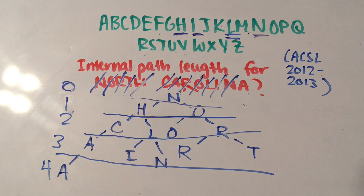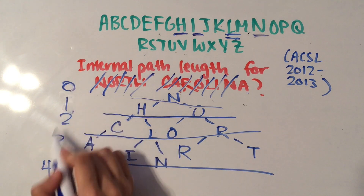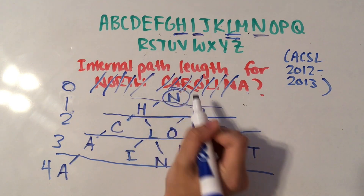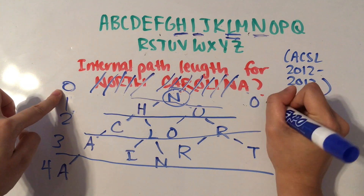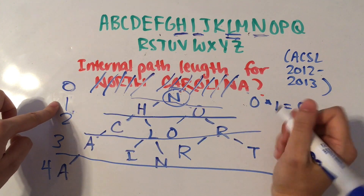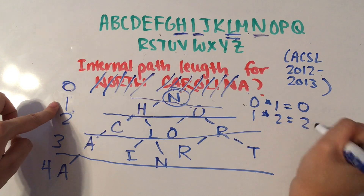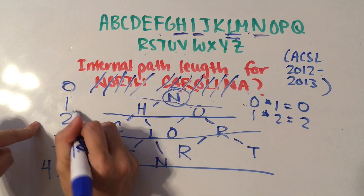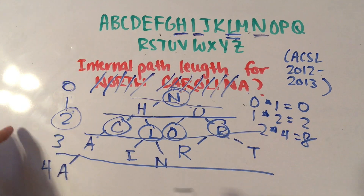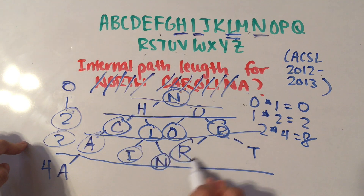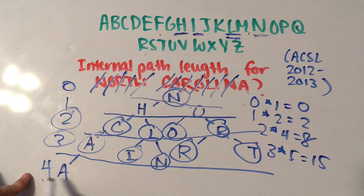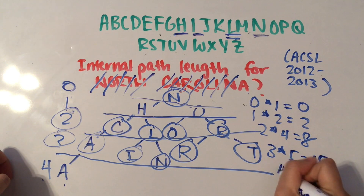To get the internal path length you're going to multiply each level number by how many letters are in each row. There's one letter in row 0, so 0 times 1 is 0. Then 1 times 2 for H and O gives 2. Then 2 times 4 is 8. Then 3 times 5 is 15. And last of all, 4 times 1 is 4.